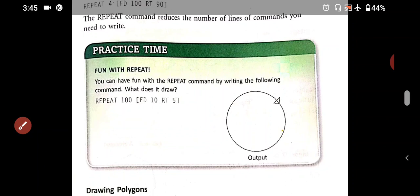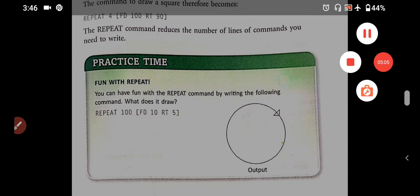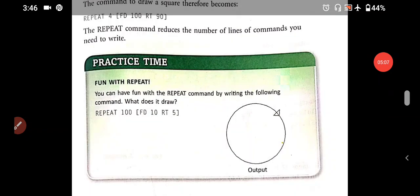After this, the circle is made. Repeat 100 times. What do you have to repeat 100 times? In the bracket, FD10 and RT5. This means that you have to make one step. Repeat the command. The total is 100 times. RT5. After this, the circle is made.